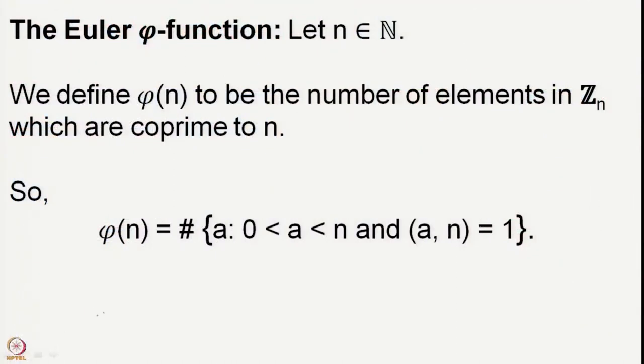We saw the definition of this function and we saw two basic properties. The first one was that whenever your number is a power of a prime, then we know what the value of the Euler phi function should be. Secondly, when you have two co-prime numbers a and b, then the Euler phi function of the product ab is the product of the Euler phi functions.